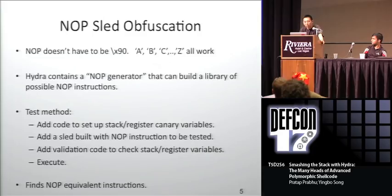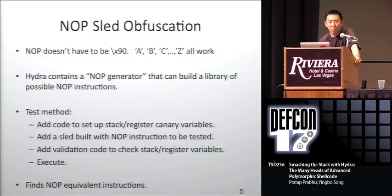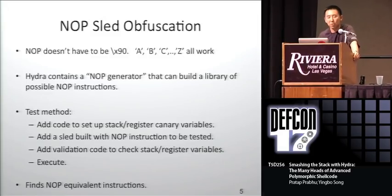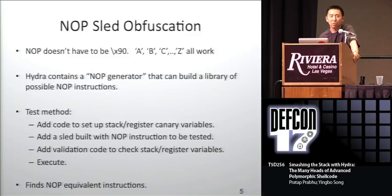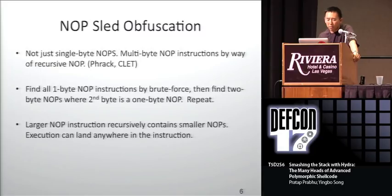No-op sled obfuscation: no-ops don't have to be hex 90. If you look at the CLET engine, for example, they use ASCII characters A to Z — any of those characters are actually valid no-ops. You can create a group of these, put them in front of the payload, and execute that, and your payload will still be fine. Hydra contains a no-op generator that builds a library of all possible no-op instructions of multiple byte sizes. We do this by setting up stack and register canary variables, then build a sled using a potential no-op instruction, then write validation code at the end to check those canary variables. If the no-op sled worked and all the canary variables are fine, then that instruction can be used as a no-op.